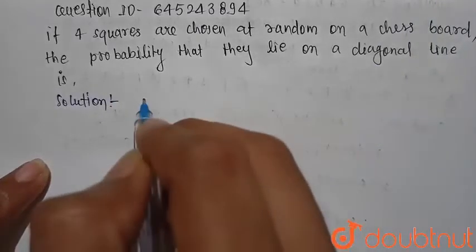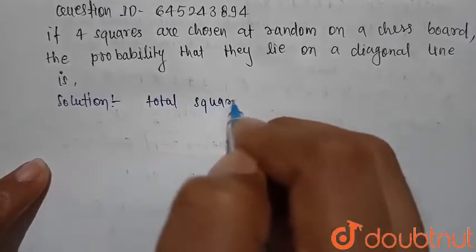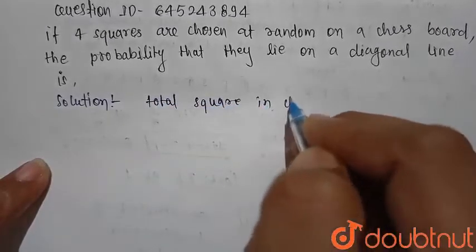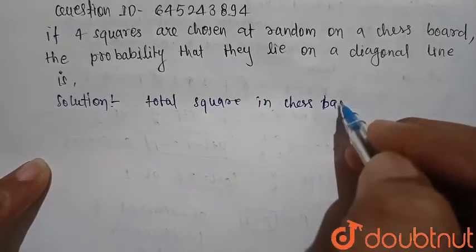So first we know that the total square in a chessboard, we know that this is equal to 204.